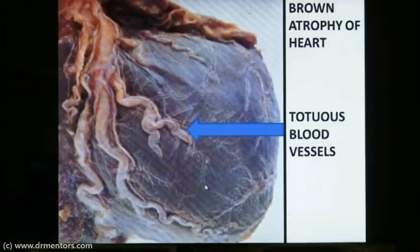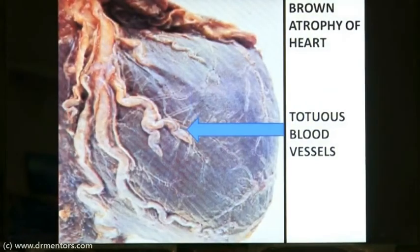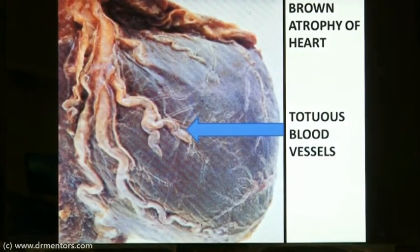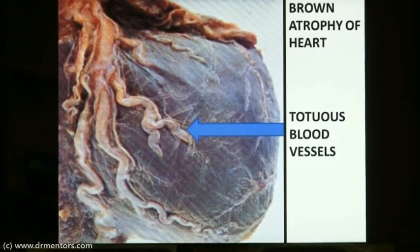Next we come to the brown atrophy of the heart. Atrophy is a decrease in the size of the organ due to a decrease in the number of cells and also the size of the cells. Since size is a relative term, how do you appreciate atrophy? In this case you will see that the heart vessels have become very tortuous, which is an important sign indicating that the heart is actually atrophied, causing the overlying veins to appear tortuous.